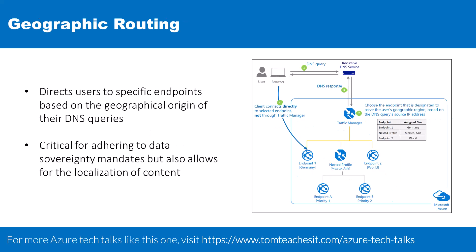In the realm of geographic sensitivity, the geographic routing method stands out. What this does is it directs users to specific endpoints based on the geographical origin of their DNS queries. This capability is critical for adhering to data sovereignty mandates, as well as for the localization of content and tailoring of user experiences. It also provides valuable insights by measuring traffic from different regions.